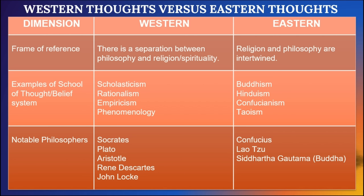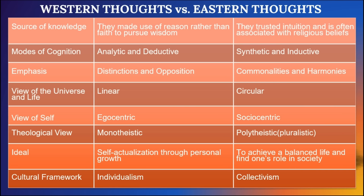Eastern schools of thought include Buddhism, Hinduism, Confucianism, and Taoism. In terms of philosophers: western thinkers include Socrates, Plato, Aristotle, René Descartes, and John Locke, among many others. Eastern thinkers include Confucius of Confucianism, Laozi of Taoism, and Siddhartha Gautama of Buddhism. Hinduism has no recognized single founder, possibly because it is considered the oldest religion in the world.